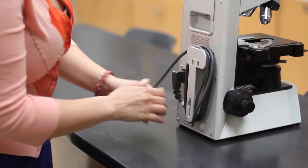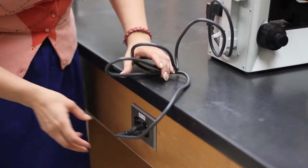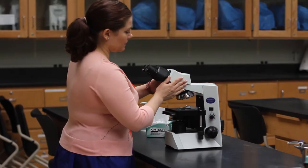Unwind the power cord and plug it into the socket at the back of your desk. The observation tube should be locked in the forward position. Check that it is locked.